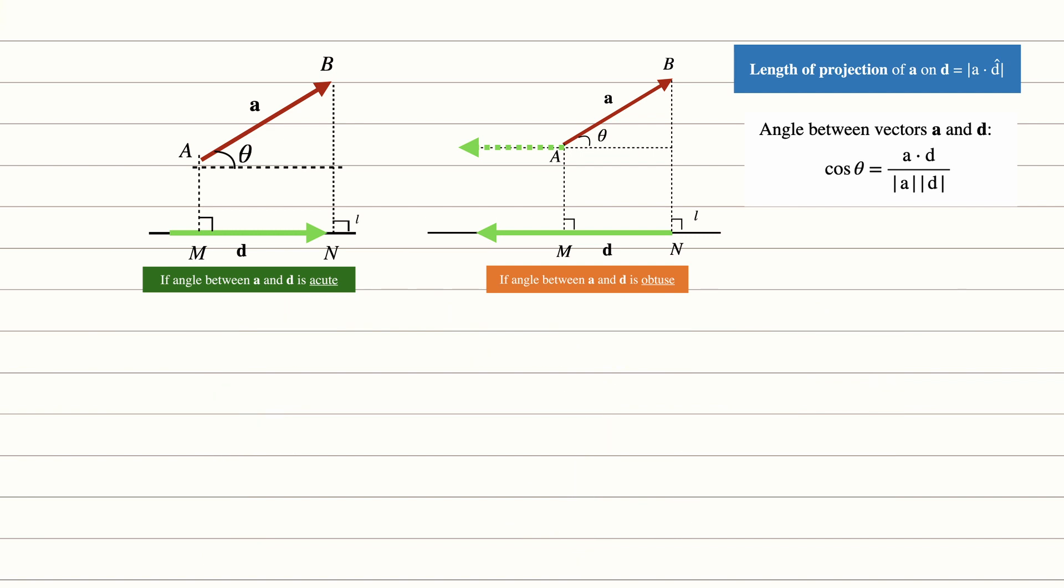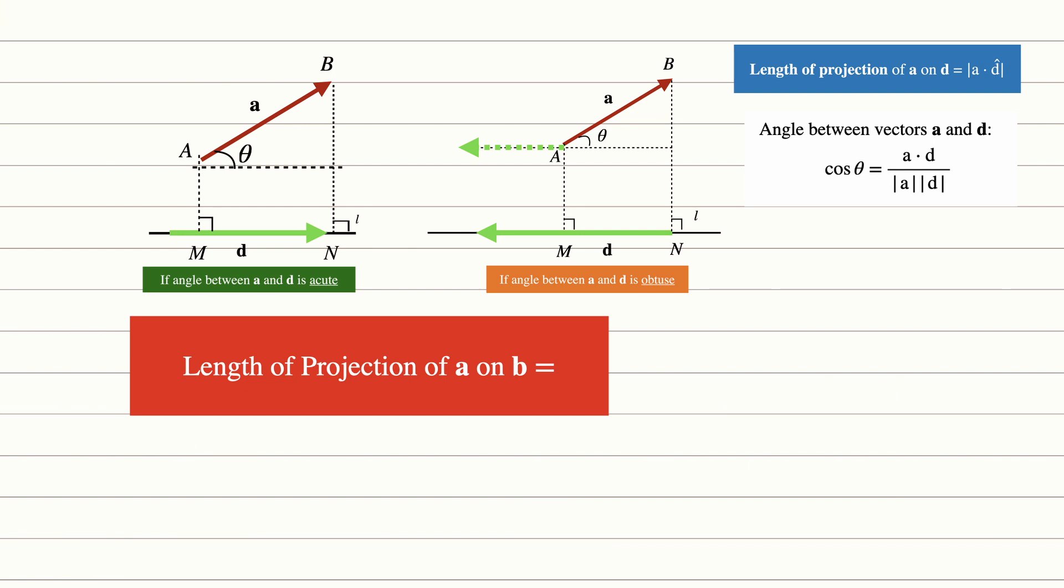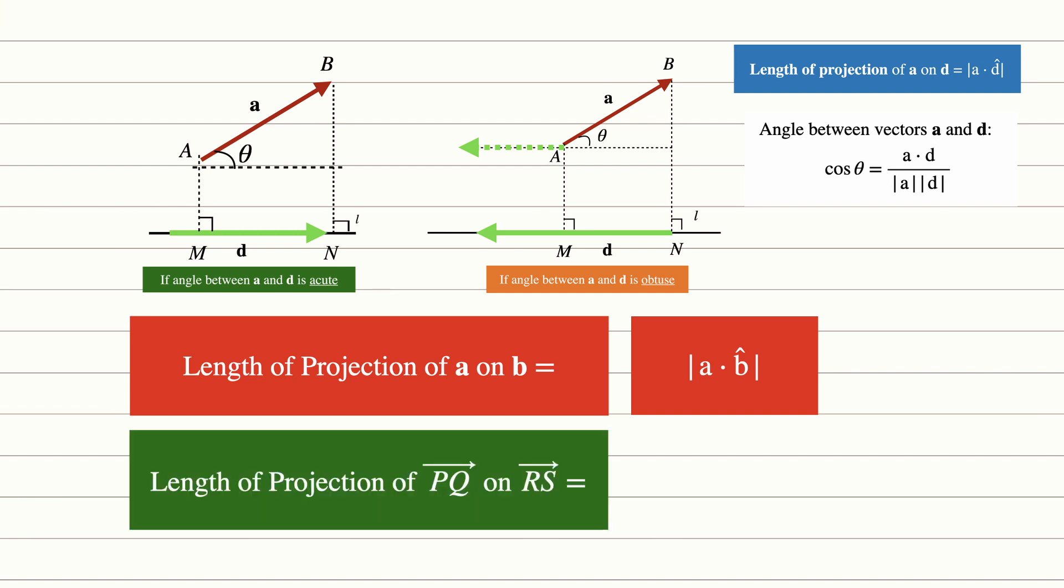Now you can apply them in other scenarios too. If we want to find the projection of vector a on b, simply write the a first, then the unit vector of b and not forgetting your modulus sign. Now likewise, if you want to get the projection of say vector pq on rs, simply write the vector pq first within the modulus, then dot the unit vector of rs.